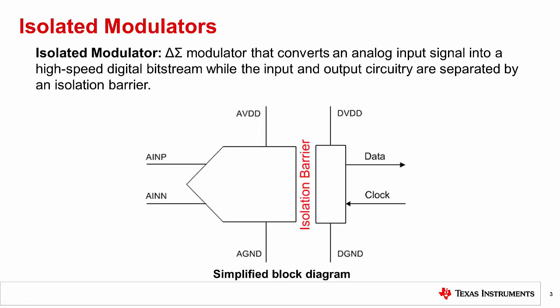Let's start by defining what an isolated modulator is. An isolated modulator is a delta-sigma modulator that converts an analog input signal into a high-speed digital bit stream of ones and zeros, while the input and output circuitry are separated by an isolation barrier.